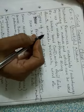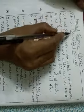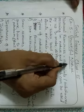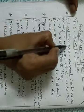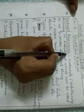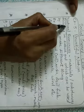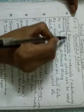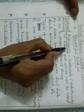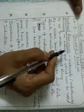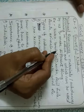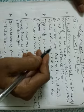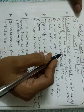Hello students, today we are going to start chapter number five, that is Bountiful Nature. In this chapter we are going to read about natural resources. Our earth consists of a variety of natural resources like light, air, water, plants, soil, minerals, and fossil fuels.